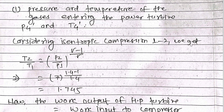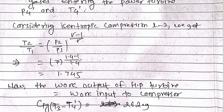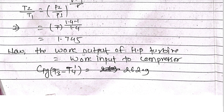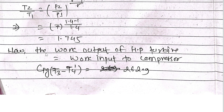Considering isentropic compression from state 1 to 2, we apply: T2/T1 = (P2/P1)^((gamma-1)/gamma). With P2/P1 = 7 and gamma = 1.4, the exponent is (1.4 - 1)/1.4. Solving this gives T2/T1 = 1.745. The work output of the HP turbine equals the work input to the compressor.